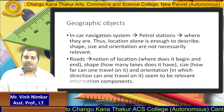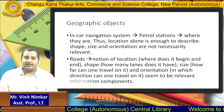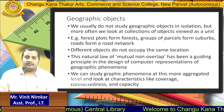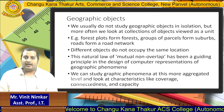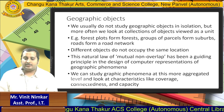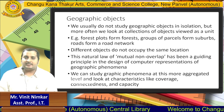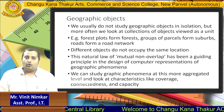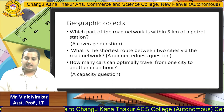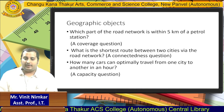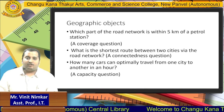For geographic objects like roads, we need to know where the road is located, where it stops, and its shape, size, and so on. We do not study geographic objects in isolation; we need to study them by combining different geographic objects, like forest plots — which area a forest covers, what animals are present, road networks, etc. — and they should not overlap with each other. These geographic objects should answer questions like: which part of the road network is within 5 kilometers of a petrol station, which is the shortest route between two cities, and how many cars can optimally travel from one city to another.